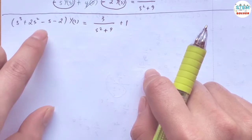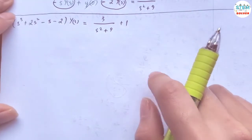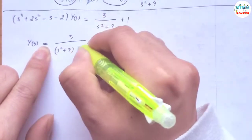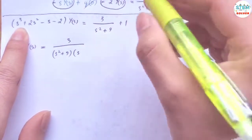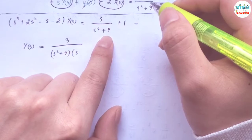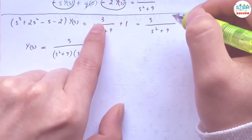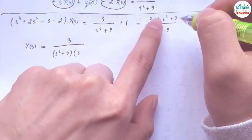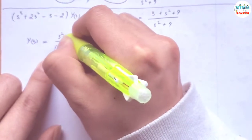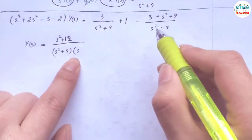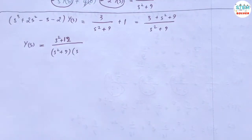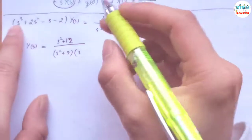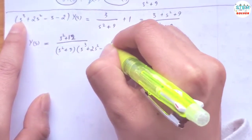Now I divide both sides by the polynomial to isolate capital Y(s). On the right side I have 3 over (s squared plus 9) times (s cubed plus 2s squared minus s minus 2), plus 1. Combining over the LCD of s squared plus 9, the numerator becomes 3s squared plus 12, and the denominator is (s squared plus 9)(s cubed plus 2s squared minus s minus 2).